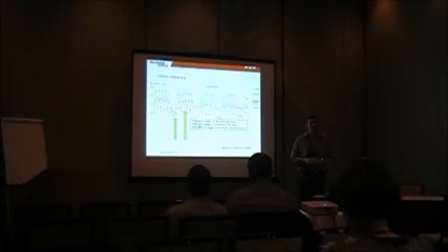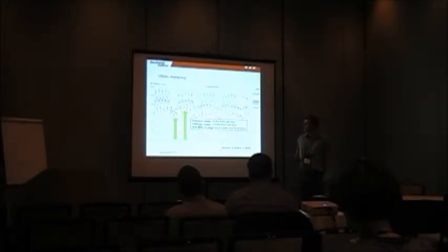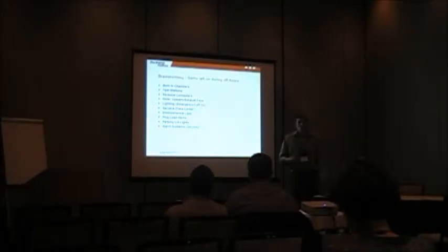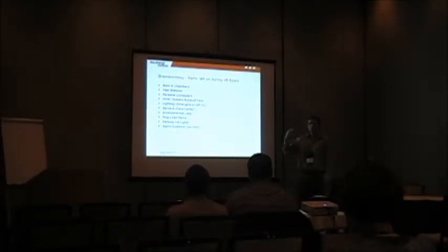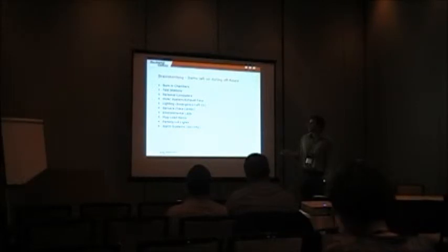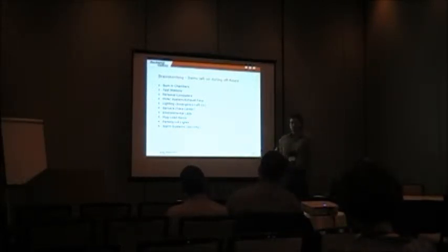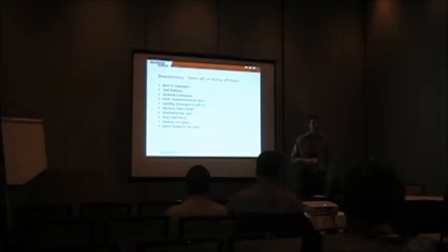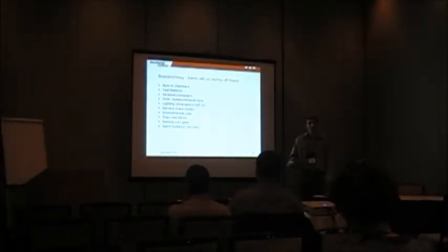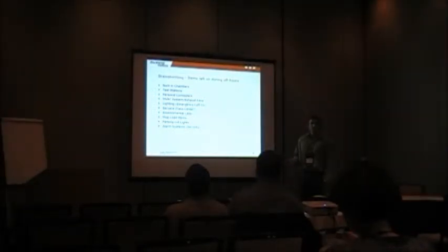We said, let's look at a couple different angles and see if they're telling us the same story. That was helpful and gave us some good information, but it still doesn't tell us where to start. So the next thing we talked about is: what is running most of the time at night? We have chambers where we recycle product for a day or two at a time, test equipment, personal computers, an HVAC system, emergency lighting, general lighting, data servers, environmental labs doing testing, plug load items like fans and space heaters, parking lot lights, and an alarm system. Those are the things that are on 24/7 or at least in non-working areas.